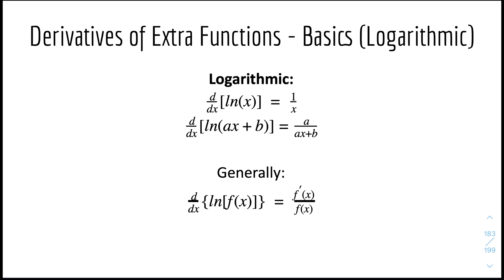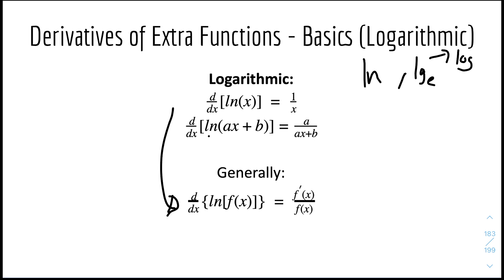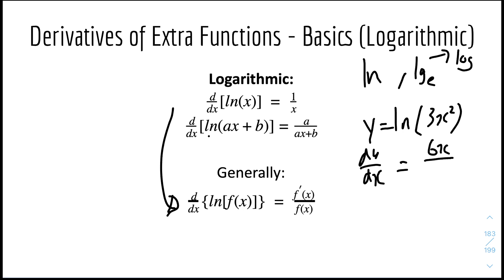Then we have logarithms — natural logarithms to be exact — because in IGCSE A-level math we look at natural logs, which is ln, or log base e. So if we have d/dx of ln(x), it will be equal to 1/x. And if it's ln(ax + b), it will be equal to a over (ax + b). The pattern is: the derivative of ln(f(x)) equals the derivative of the function divided by the function itself. For example, if y equals ln(3x²), dy/dx equals 6x over 3x², which simplifies to 2/x.